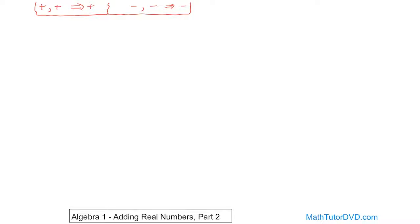Now, if you're adding a positive number to a negative number, or if you're adding a negative number to a positive number — so if they're mixed signs — the answer could be positive or negative, and you have to figure that out as you solve the problem. The sign of the answer is going to take the same sign as whichever has the larger absolute value of the two numbers you start out with, and you're going to end up subtracting the numbers, as we've done in the last section.